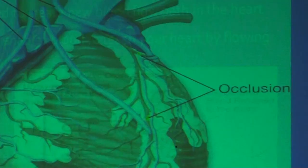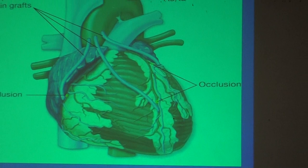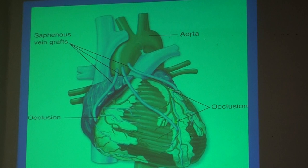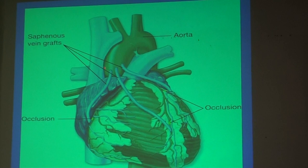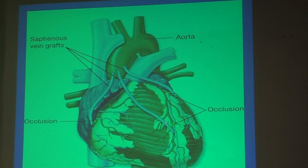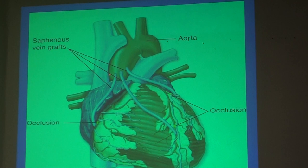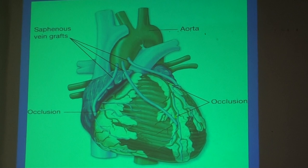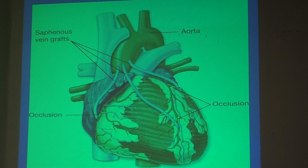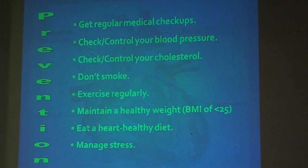In bypass surgery, a surgeon takes an artery or vein from the leg, arm, or chest wall. The vessel is attached to the aorta and then to the coronary artery downstream from the blockage, restoring blood flow by bypassing the blocked segment. However, the goal is to prevent needing bypass surgery or stenting through prevention.